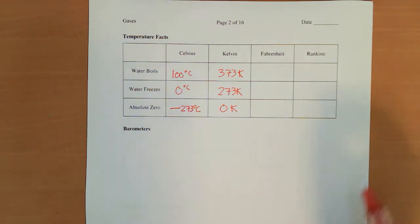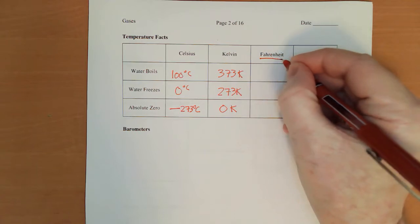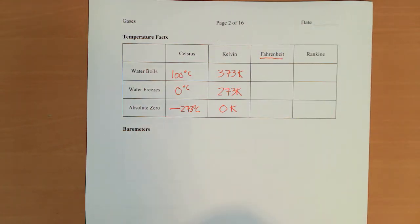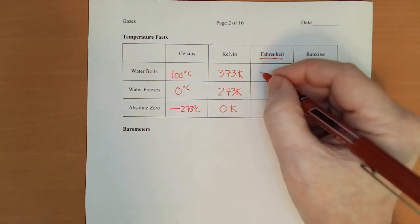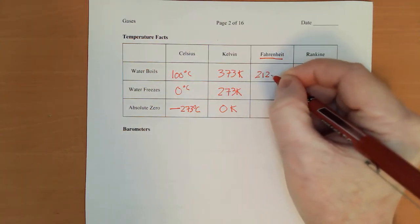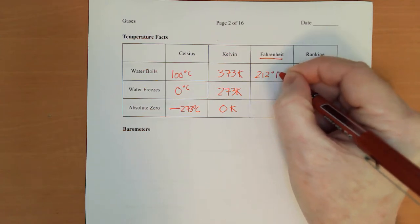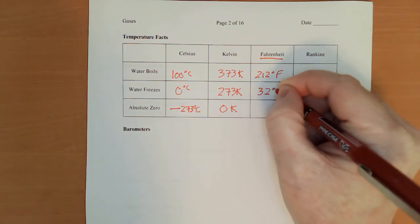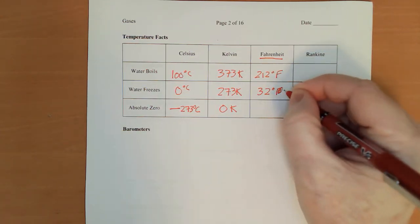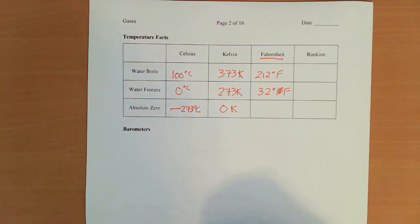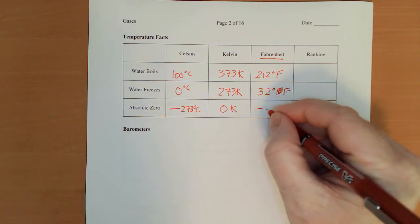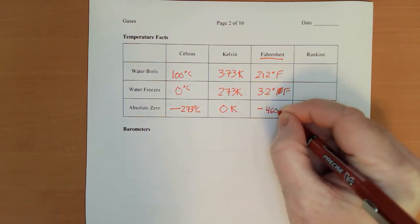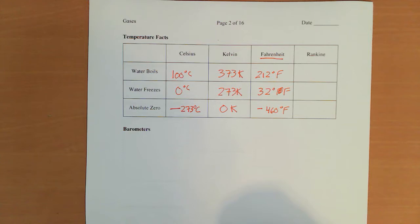Now, the F word. I don't even really want to say it on camera here. Fahrenheit. Water boils at 212 degrees Fahrenheit. Water freezes at 32 degrees Fahrenheit. And our absolute zero is a whopping negative 460 degrees Fahrenheit.